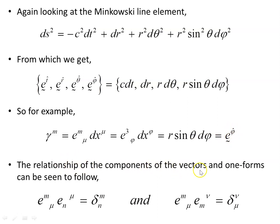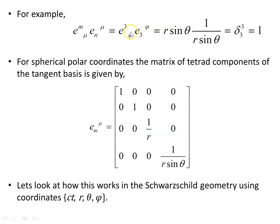The relationship between the components of the vectors and the one forms follows the Kronecker delta for the tetrad indices m and n, but also the Kronecker delta for the coordinate indices mu and nu. For example in the phi direction: e3_phi equals r sin theta, and e lower 3 upper phi equals one over r sin theta, and together they give us one. The matrix of tetrad components of the tangent basis is given by these components.